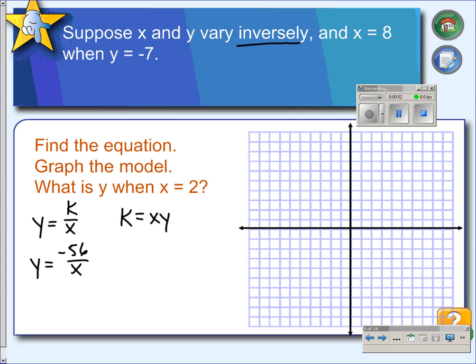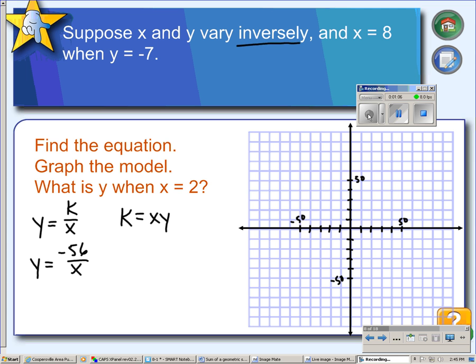Then we're going to graph this. So, if x is 1, y would be negative 56, so we're going to need some kind of scale that will work. So, let's say we just count by tens.